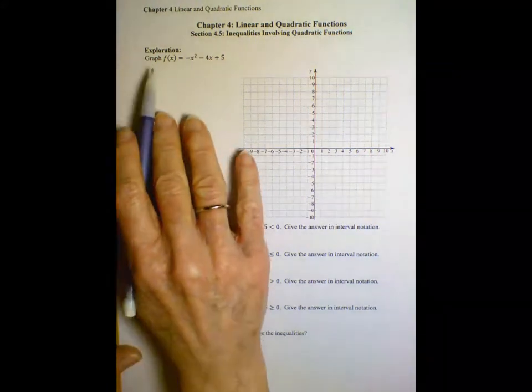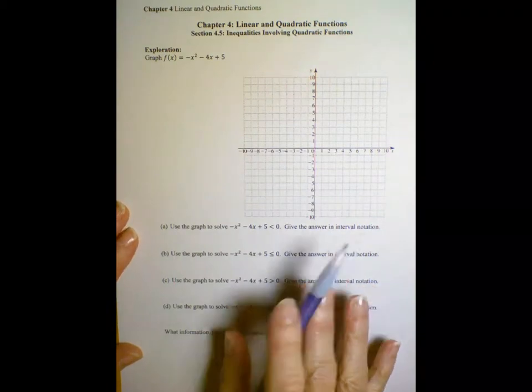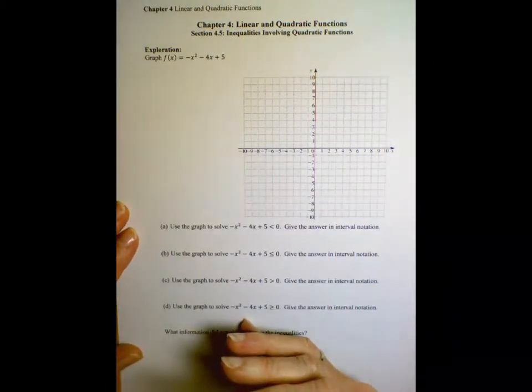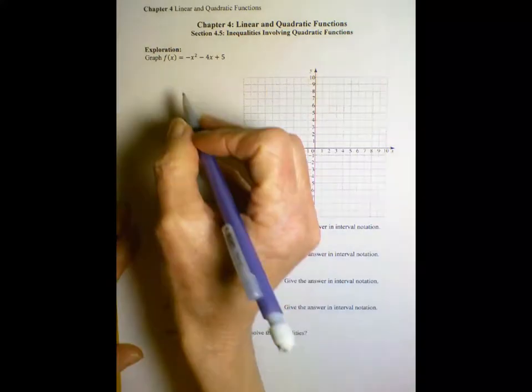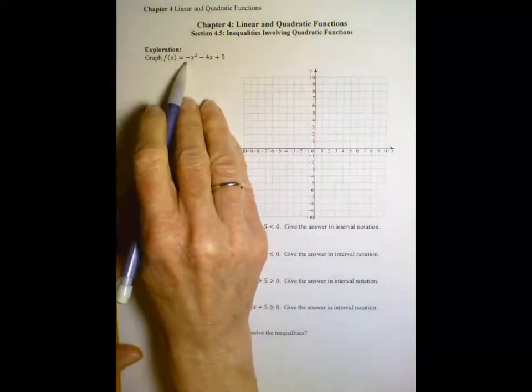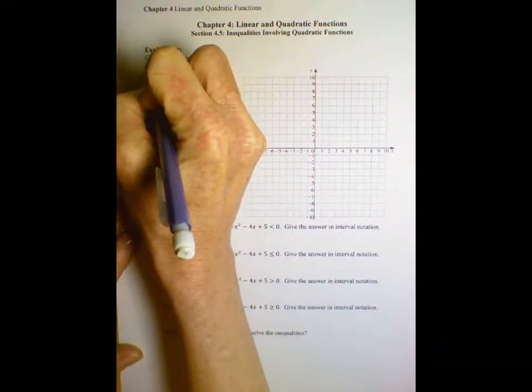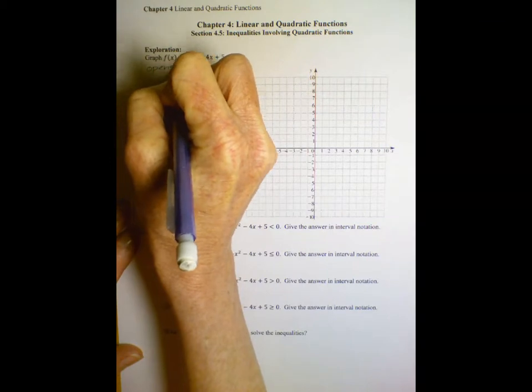It says to graph this quadratic function and so let's use the method where we analyze all the different parts, finding the vertex and such. We'll start with which direction it opens and since a is negative 1 the direction of opening is down, right, opens down.